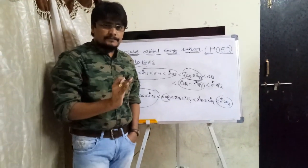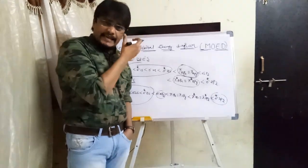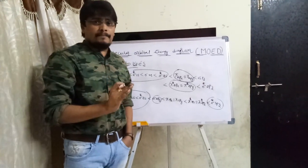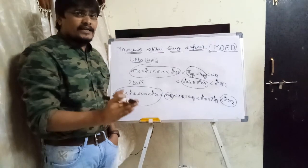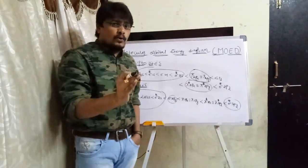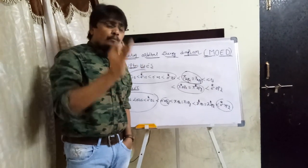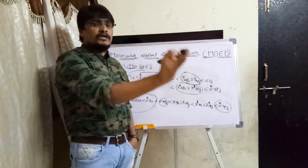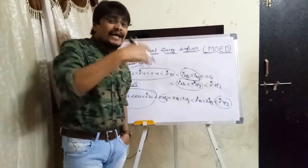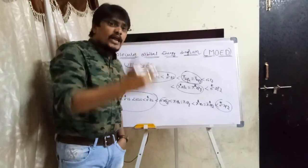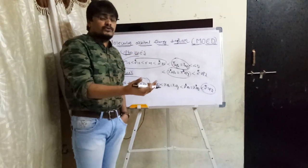Now, is this just something you've memorized — is it a myth? It is not a myth. There is a theory behind why we follow one order for molecules containing up to 14 electrons, and a different order for molecules containing more than 14 electrons. This will be explained in the next video.